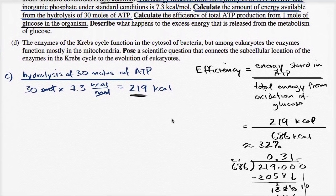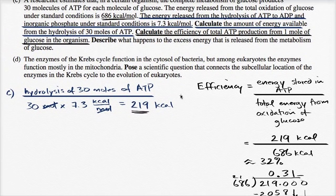So this is approximately 32% efficiency. So roughly 32% of the potential energy, or of all of the energy that can be produced from the oxidation of glucose, actually ends up getting stored in ATP.